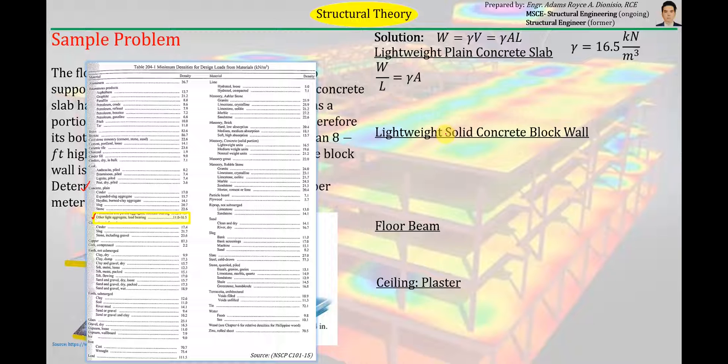For the lightweight solid concrete block wall. So block wall siya. Block wall is also a masonry. So pwede tayong pumunta dito sa letter M, masonry. Tapos block wall siya, solid. So pwede tayong pumunta dito sa masonry, concrete solid portion. Ayan. Tapos lightweight. So dito tayo sa una. According to the table, the unit weight of that material is 16.5 as well.